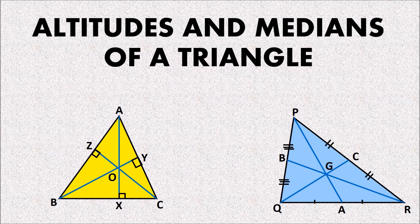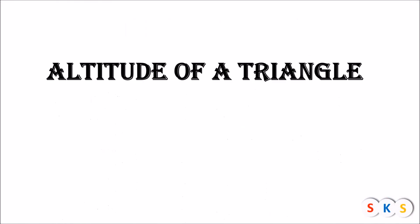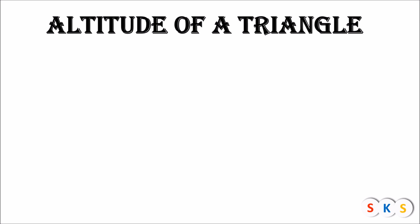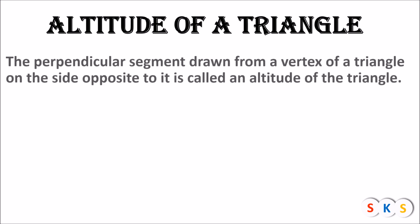Dear student, today we will learn chapter number four: altitude and medians of a triangle. Please subscribe to my channel. Let's start. What do you mean by altitude of a triangle? The perpendicular segment drawn from a vertex of a triangle on the side opposite to it is called an altitude of the triangle.